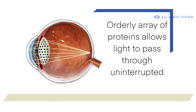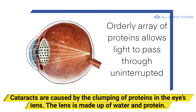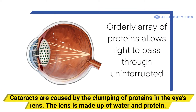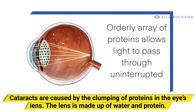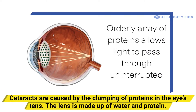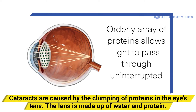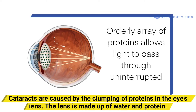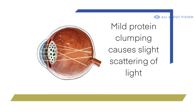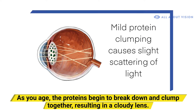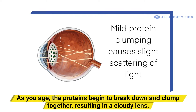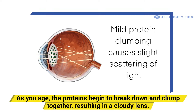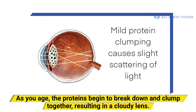Cataracts are caused by the clumping of proteins in the eye's lens. The lens is made up of water and protein. As you age, the proteins begin to break down and clump together, resulting in a cloudy lens.